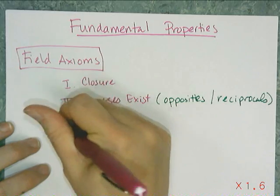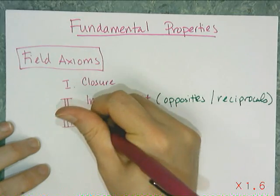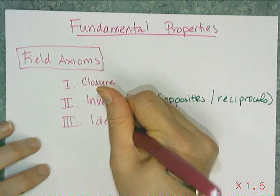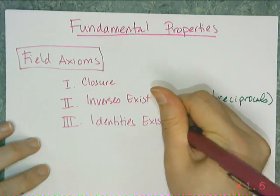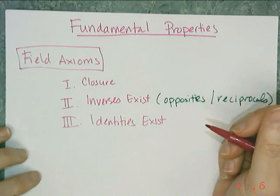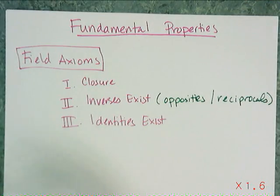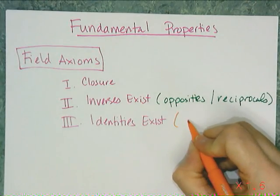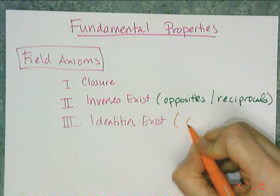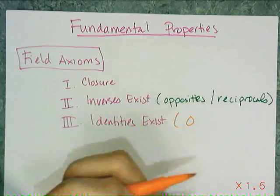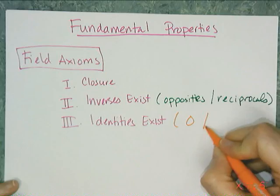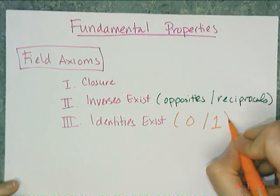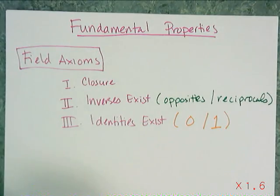The third one — and you've actually used this one before — is the identity. Identities exist, and identities are things that keep things the same. The additive identity is zero, because if I add zero to anything I get the same number. And the multiplicative identity is one, because if I multiply anything by 1, I get the same number.